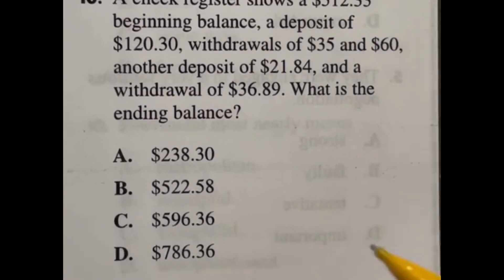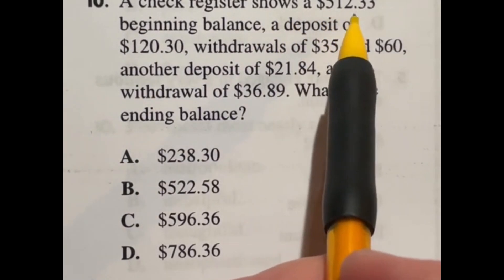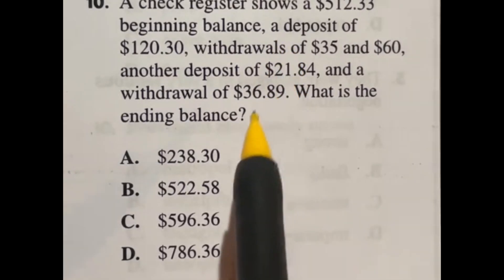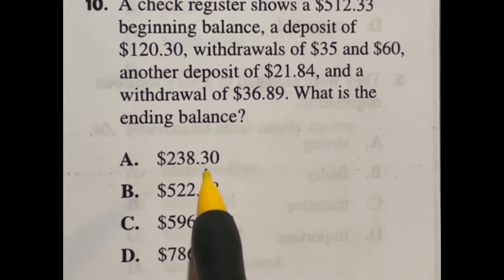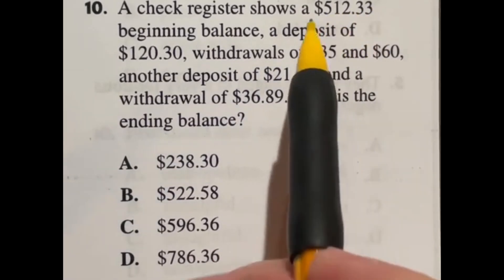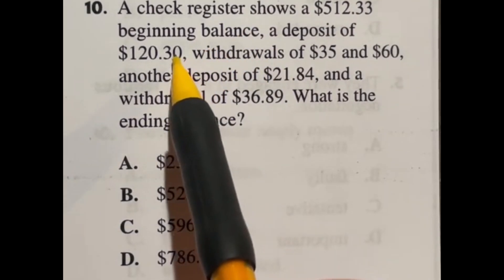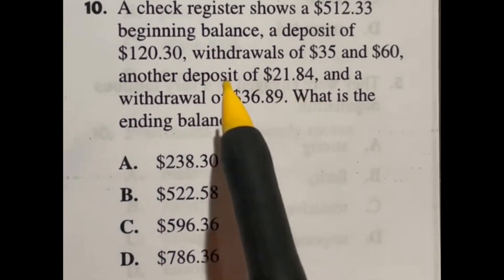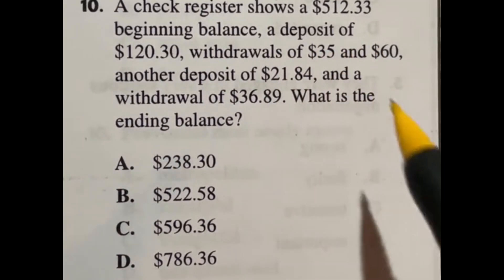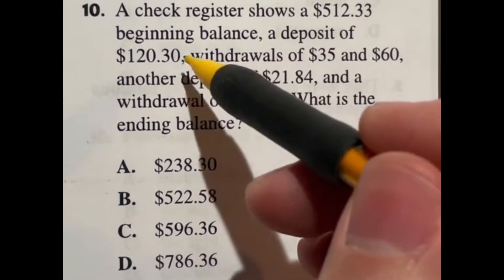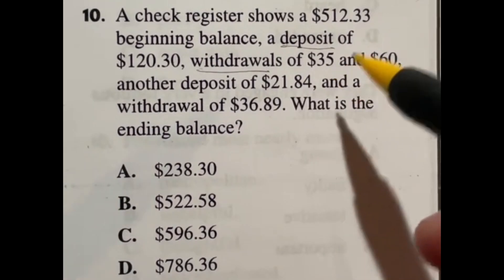So number 10 is just talking about balancing a checkbook here. So it's saying that a check register shows $512.33. Then it's going to start doing a bunch of deposits and withdrawals and we're going to see where we end up at the end. So with that said, let's go ahead and just go through each one of these. Now if you notice, these answers down here are spread out enough that I'm actually going to ignore the cents for each one and just round these off to the nearest whole number and try to go from there. So knowing that, let's look at this. We got 512, a deposit of 120.